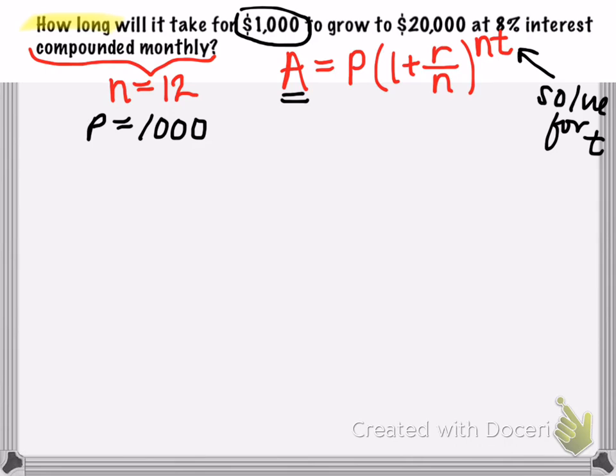Now remember, A is your accumulated value. In other words, it's your after amount. It's how much money you're going to have at the end of t years. And we want our account to grow to $20,000.